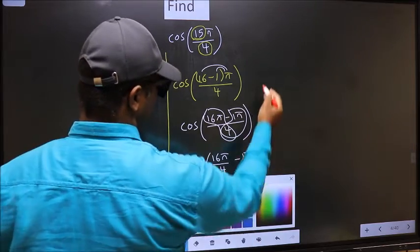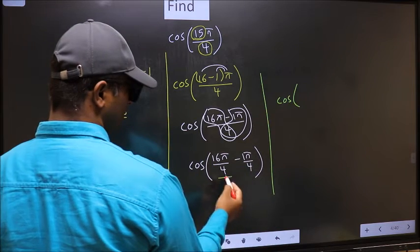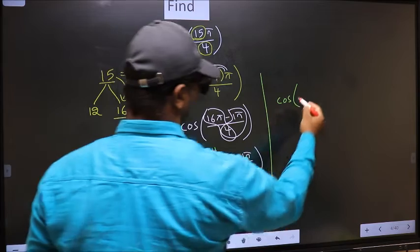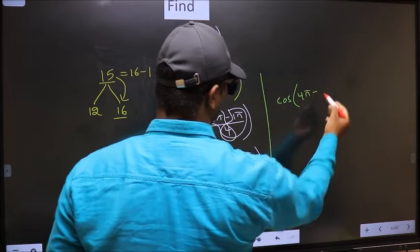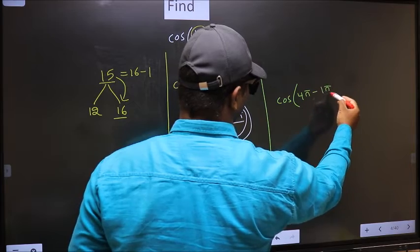Next, cos. Now cancel: 4 into 1 is 4, 4 into 4 is 1. So we get 4π - π/4.